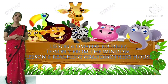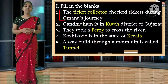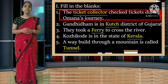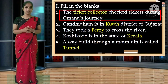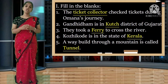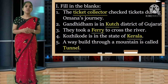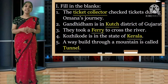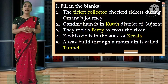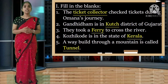Lesson 7 - From the Window and lesson 8 - Reaching Grandmother's House. First, fill in the blanks. First question: the ticket collector checked tickets during Omana's journey. Omana was traveling on a train, and when the train is moving, the person who checks the ticket is called ticket collector. Spelling: T-I-C-K-E-T C-O-L-L-E-C-T-O-R. Ticket collector.